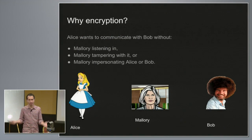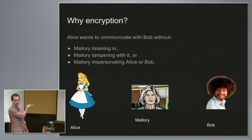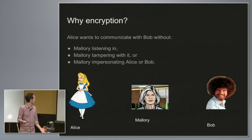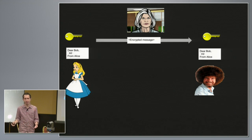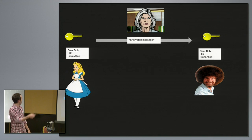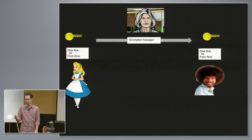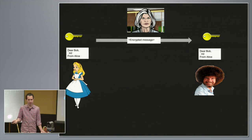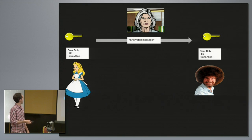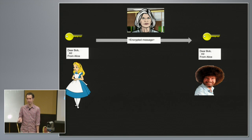So why encryption? You have Alice and you have Bob. Alice wants to communicate with Bob without Mallory listening in, tampering with it, or impersonating either Alice or Bob. This is the classic setup for symmetric encryption — Alice and Bob have a single shared key that no one else knows. With that, Alice can encrypt a message and send it to Bob, and Bob can decrypt it without anyone in the middle decrypting it or impersonating either Alice or Bob.